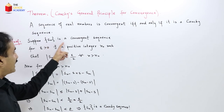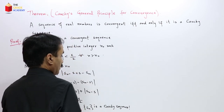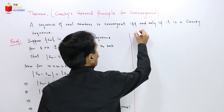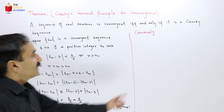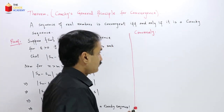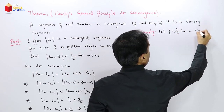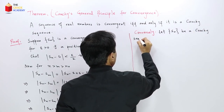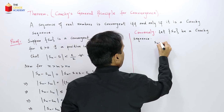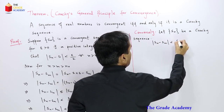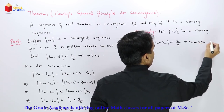So here we supposed that Sn is a convergent sequence and proved that it is a Cauchy sequence. Now conversely, we suppose that our sequence is a Cauchy sequence and we will show that it is convergent. By the definition of a Cauchy sequence, |Sn - Sm| < ε/2 for all n, m greater than n0 for some positive integer n0.